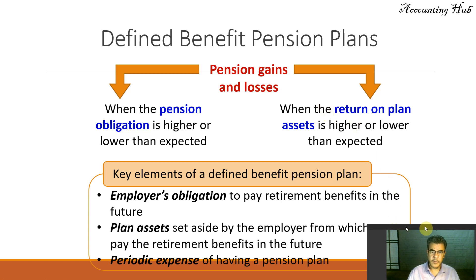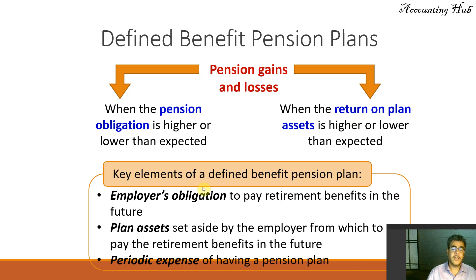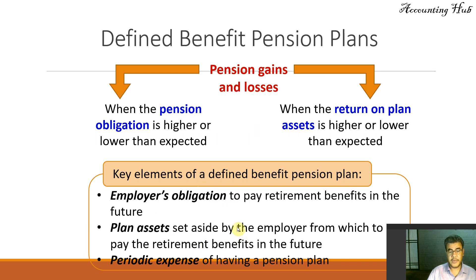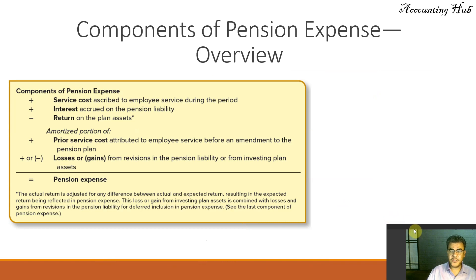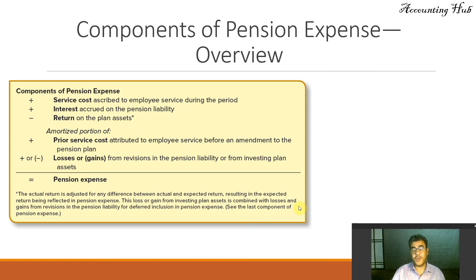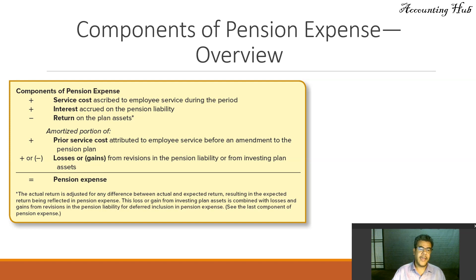The key elements of a Defined Benefit Pension Plan include the Employer's Obligation to Pay Retirement Benefits in the future, Plan Assets, and Periodic Expenses. Regarding Pension Expense — which has its own dedicated video — it typically includes Service Cost, Interest Accrual, Pension Liability, less Return on the Plan Assets, and some Amortization as well.